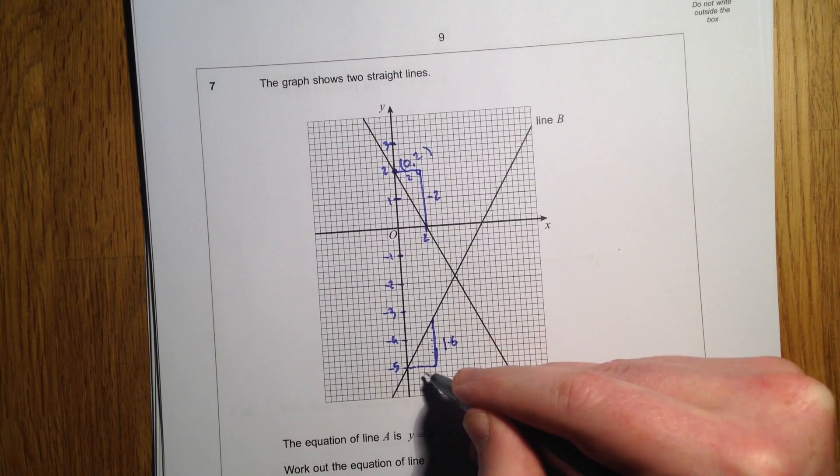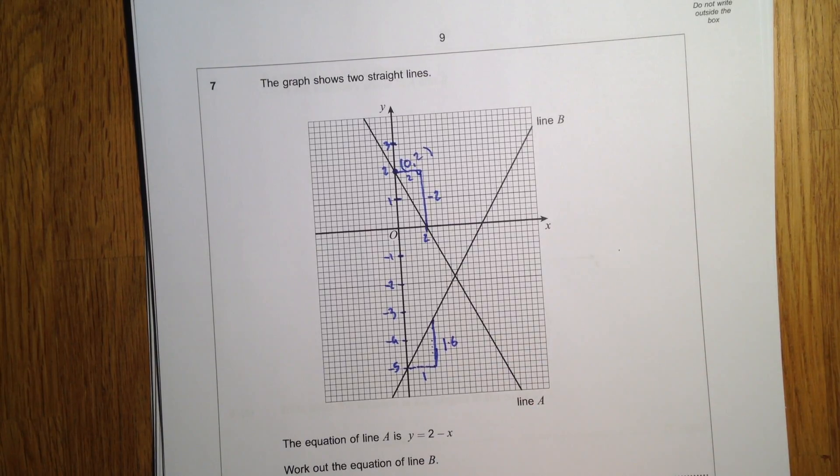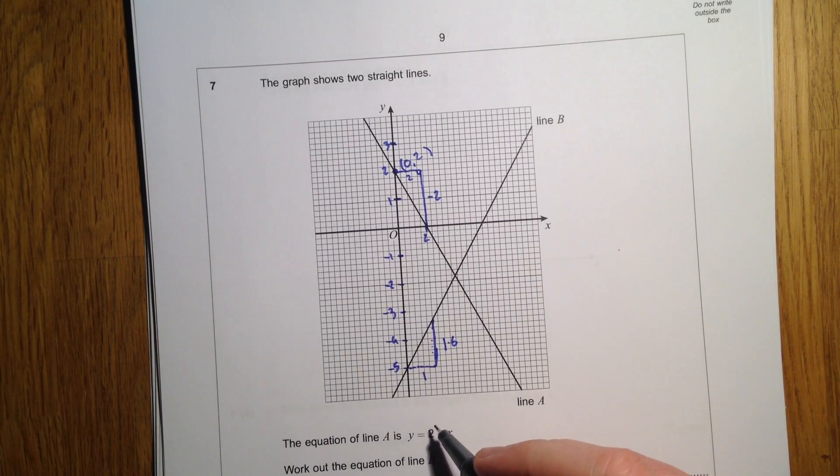So if we look at line B now, and we look at how much it goes across in 5 squares: 1, 2, 3, 4, 5.